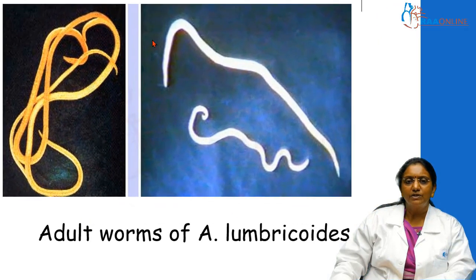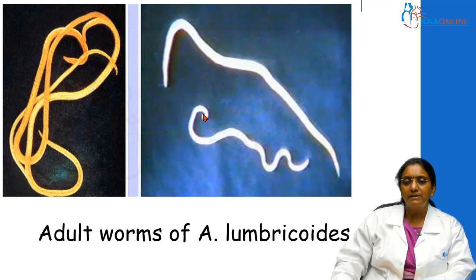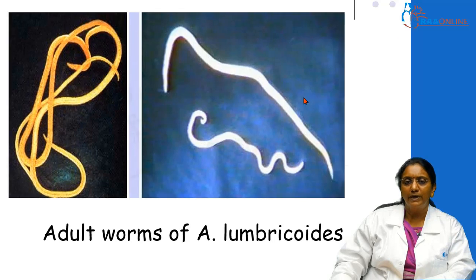This is a picture of the adult worms of Ascaris. This is the female worm and this is the male worm. The female worm is usually larger — its length is more as well as its diameter is also more. The male worms are smaller and the tail end is curved ventrally.